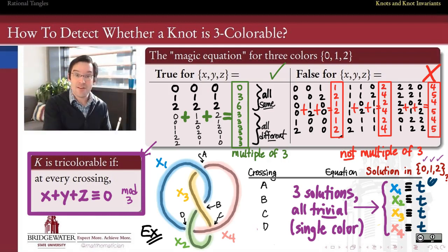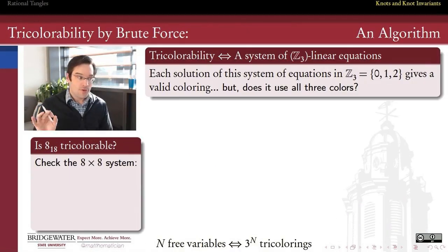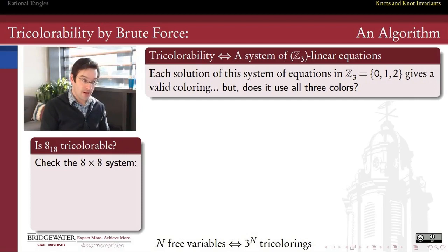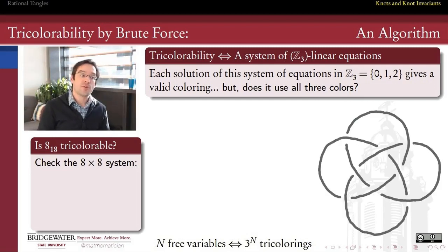Let's look at an example that is interesting in view of tricolorations. We want to build a system of equations for a more complicated knot. Every solution of that system, using the magic equation to build it up, is going to give me a valid tricolorability. But we want to know whether or not those colorations actually use all three of the colors, 0, 1, and 2. So here's a more interesting knot. This is the knot called in the old-fashioned notation 8 sub 18. In its lowest terms projection, as we're seeing here, it has eight crossings.